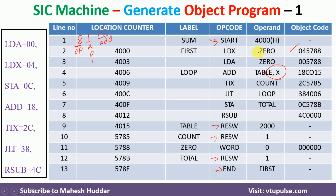For the first instruction, we check the opcode for LDX, which is 04. We write 04 in the first 8 bits. The operand field has the label 0, which is found at address 5788. So we write 5788 for the address portion. Since it is direct addressing mode, the most significant bit of the 16-bit address field is 0. For the next instruction LDA, the value is 00. The label 0 is again at address 5788, so we write 005788.